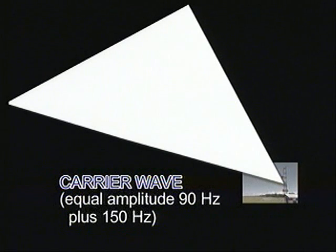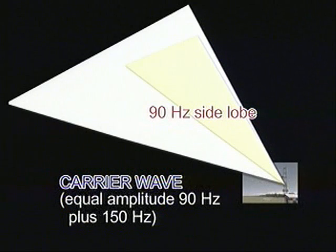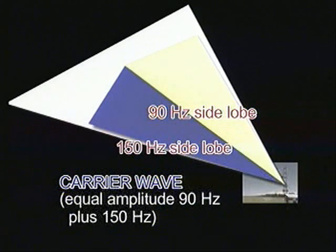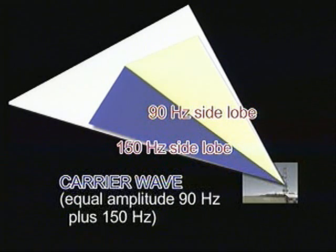This carrier wave on its own does not provide any glide path guidance. The upper aerial radiates 90 Hz and 150 Hz modulations only. These signals are transmitted in a specific phase relationship with the 90 Hz and 150 Hz signals being transmitted by the lower aerial.